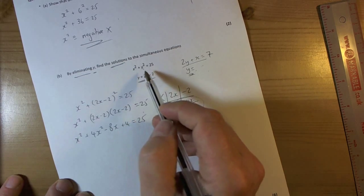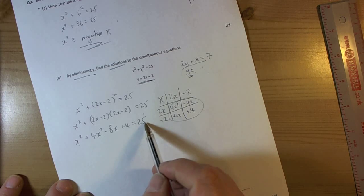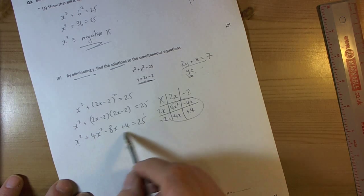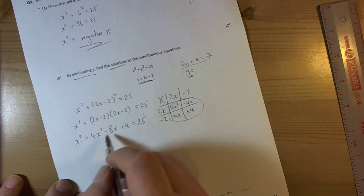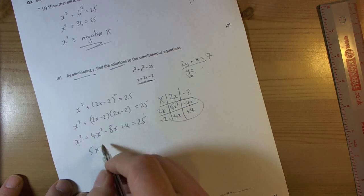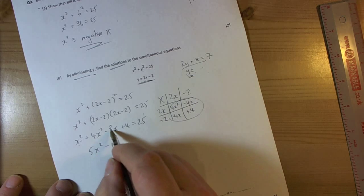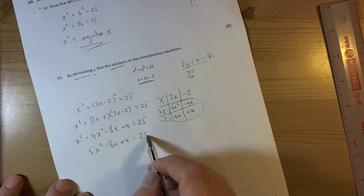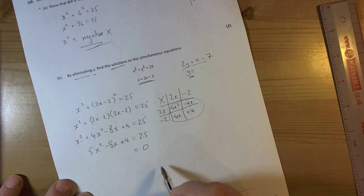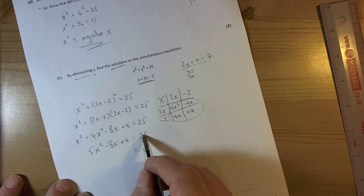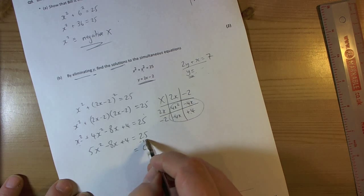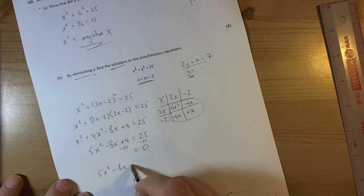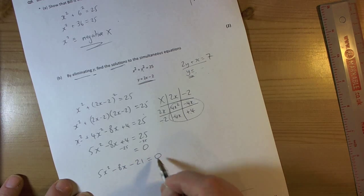It's saying find the solutions so therefore we're having to solve this. So we need to get x as a subject. So we need to rearrange this as a quadratic. Again, really important. So let's simplify first. x squared plus 4x squared is 5x squared minus 8x plus 4 equals 25. To solve the quadratic we always need equals 0 on one side. So we can make this 0 dead easy by subtracting 25 from both sides. So we end up with 5x squared minus 8x take away 21 equals 0.